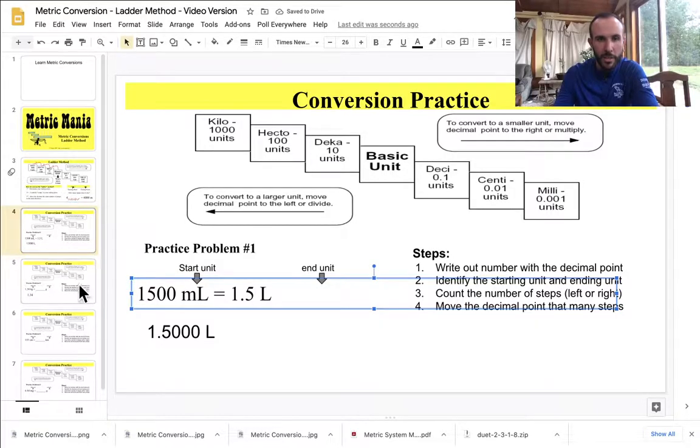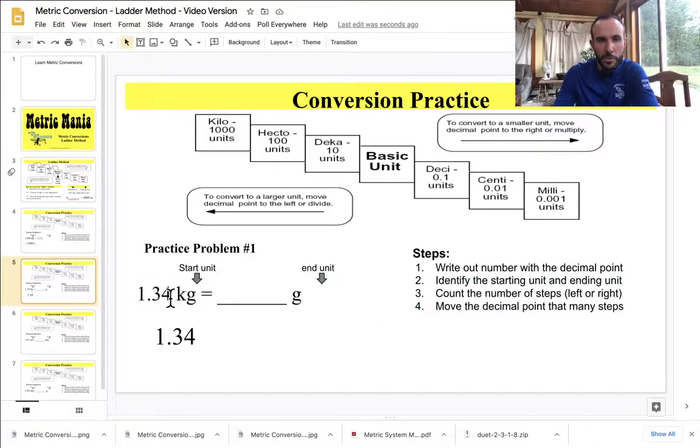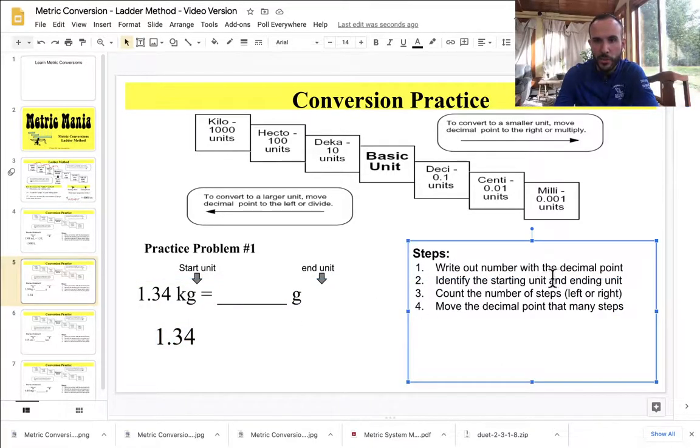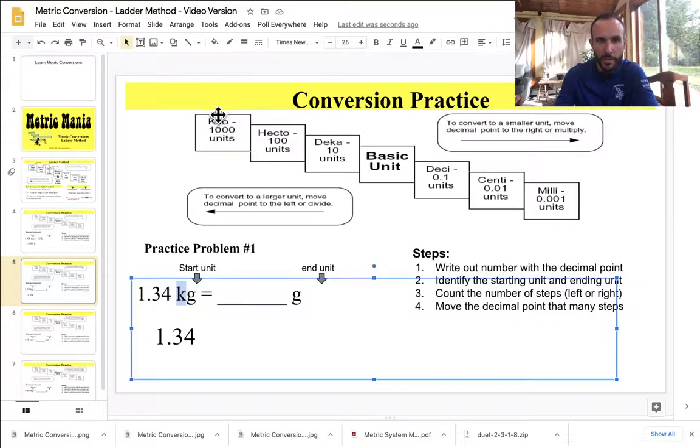All right, let's try another one. Okay, so I'm starting with 1.34 kilograms. I'm converting this into grams. So I wrote out the number with the decimal point. I'm going to identify the starting unit and the ending unit. So the starting unit is kilograms. Kilo is right over here. And the ending unit is grams. That is our base.